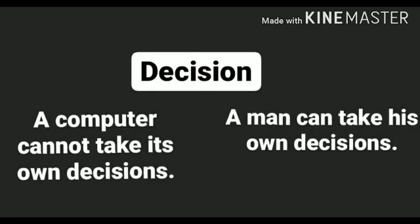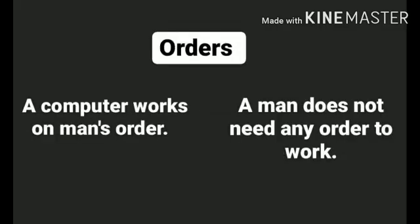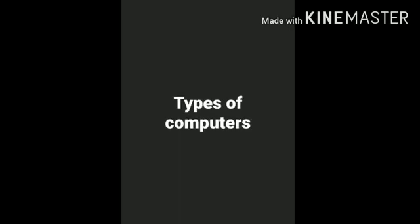Decision: a computer cannot take its own decisions, whereas a man can take his own decisions. Orders: a computer works on man's orders, while a man does not need any order to work. Now children, we come to types of computers.